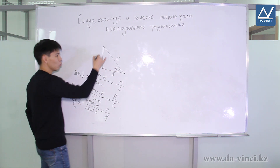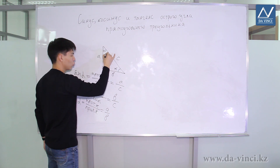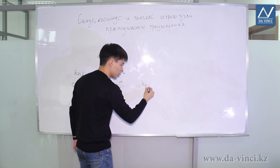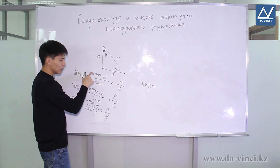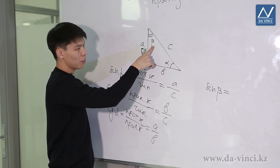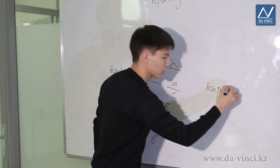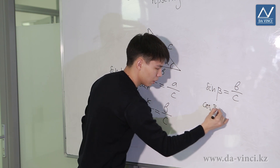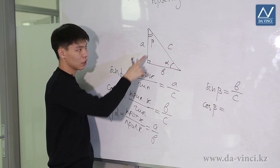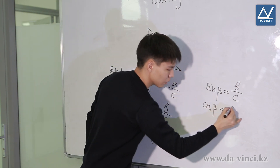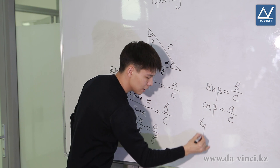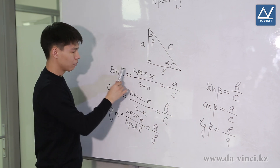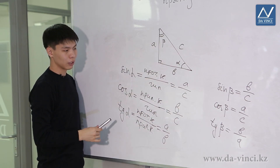For example, if we denote this angle as beta, then we can calculate the sine, cosine and tangent for it as well. The sine is the ratio of the opposite leg to the hypotenuse; for the beta angle, the opposite leg will be B, divided by the hypotenuse C. The cosine is the ratio of the adjacent leg to the hypotenuse; leg A is adjacent to beta, so it is A divided by C. And the tangent of beta will be B divided by A.